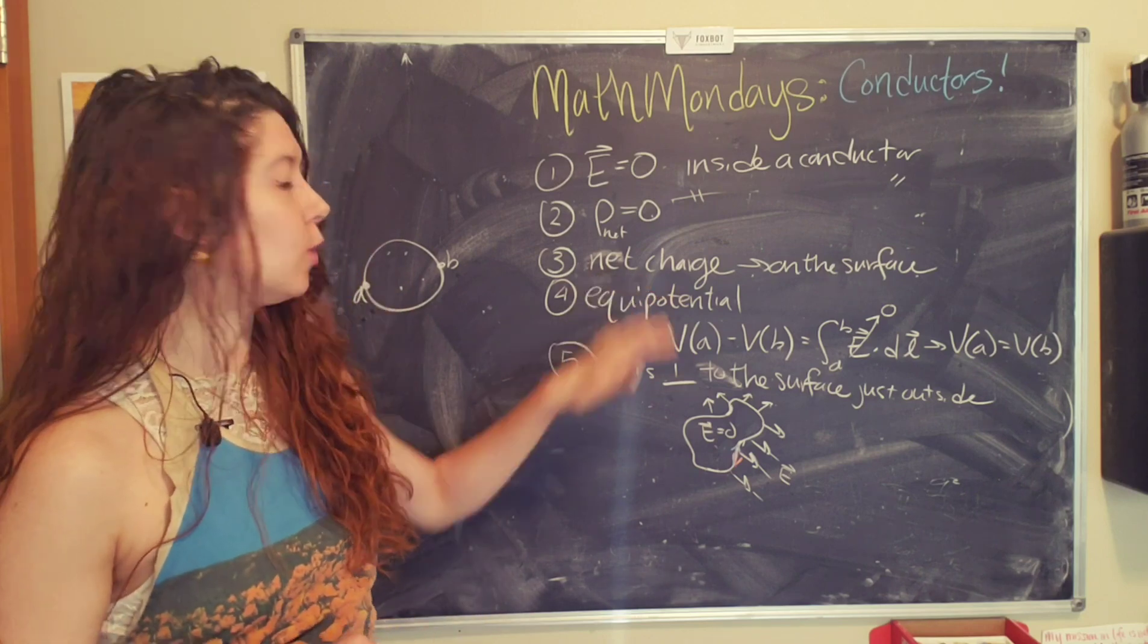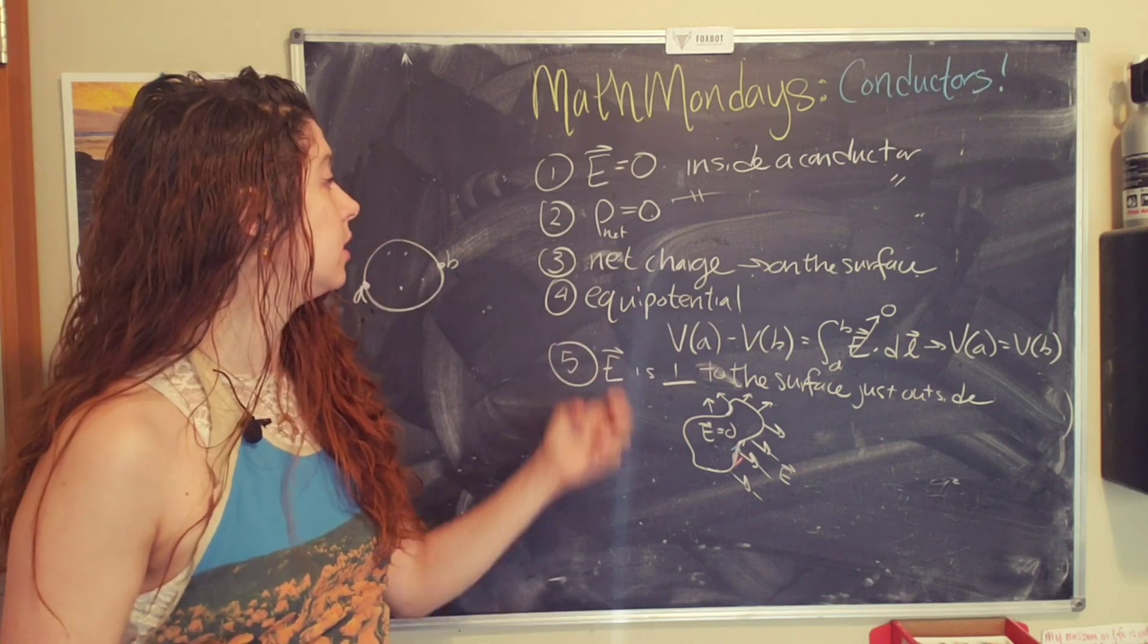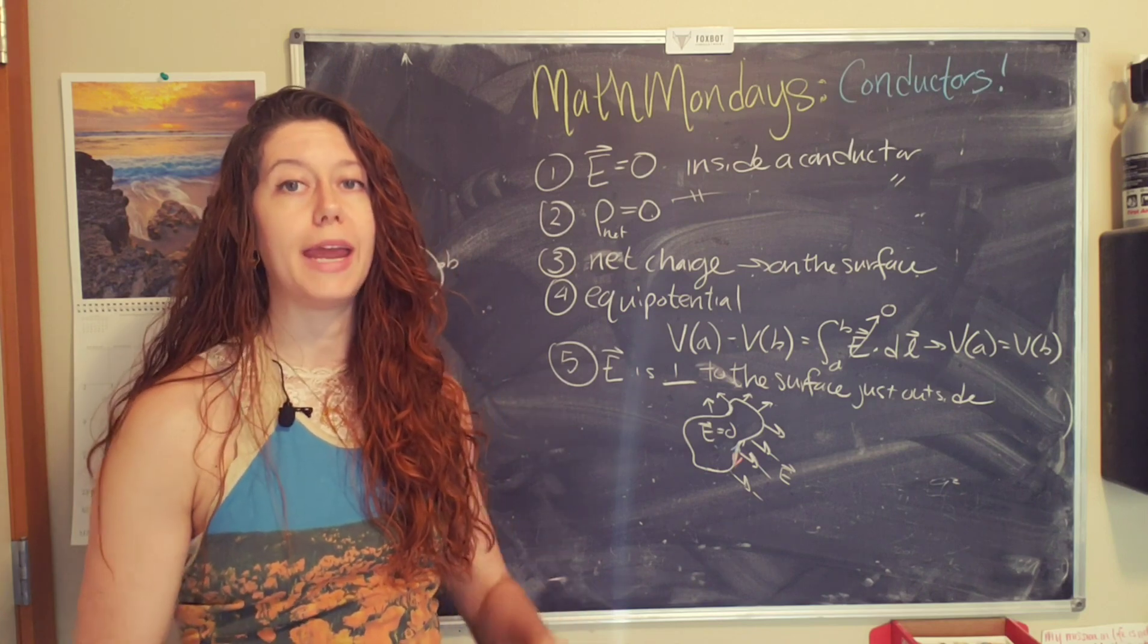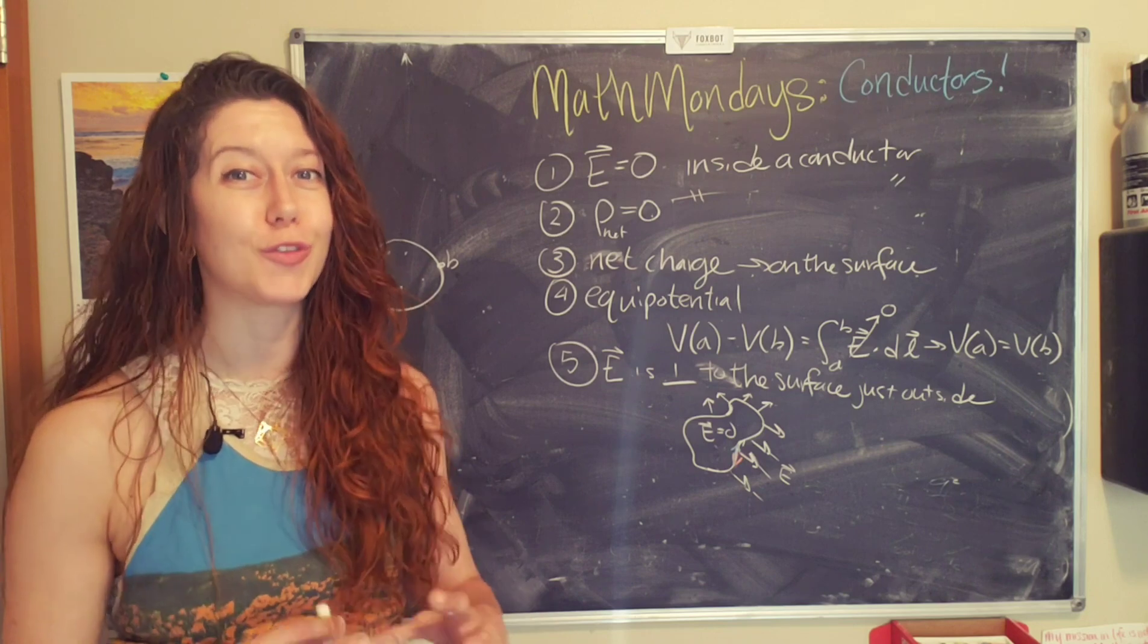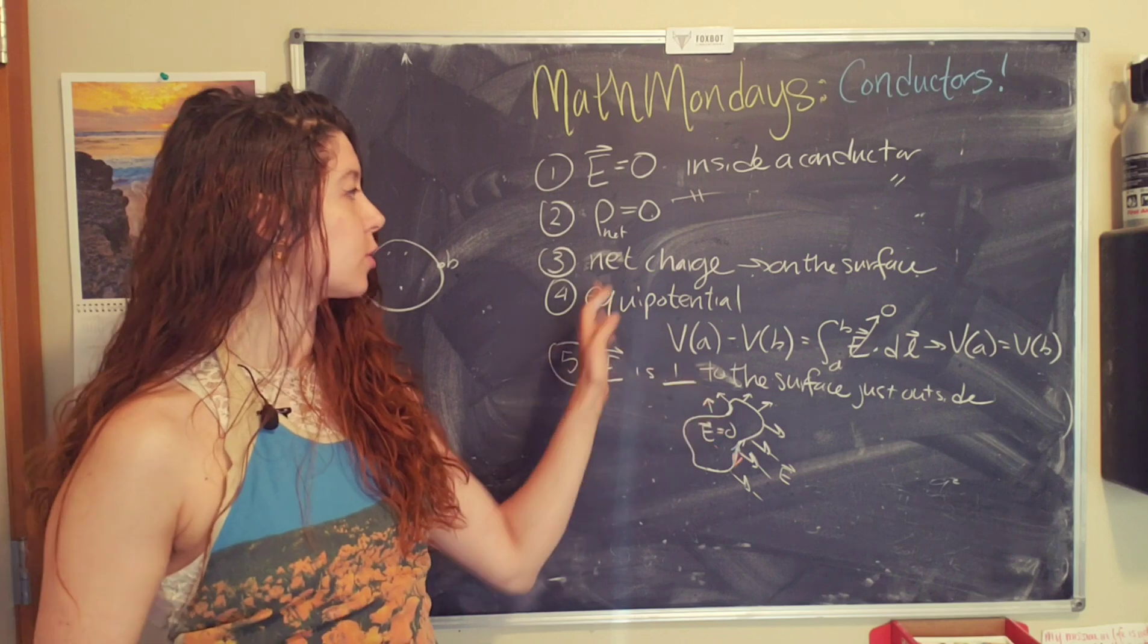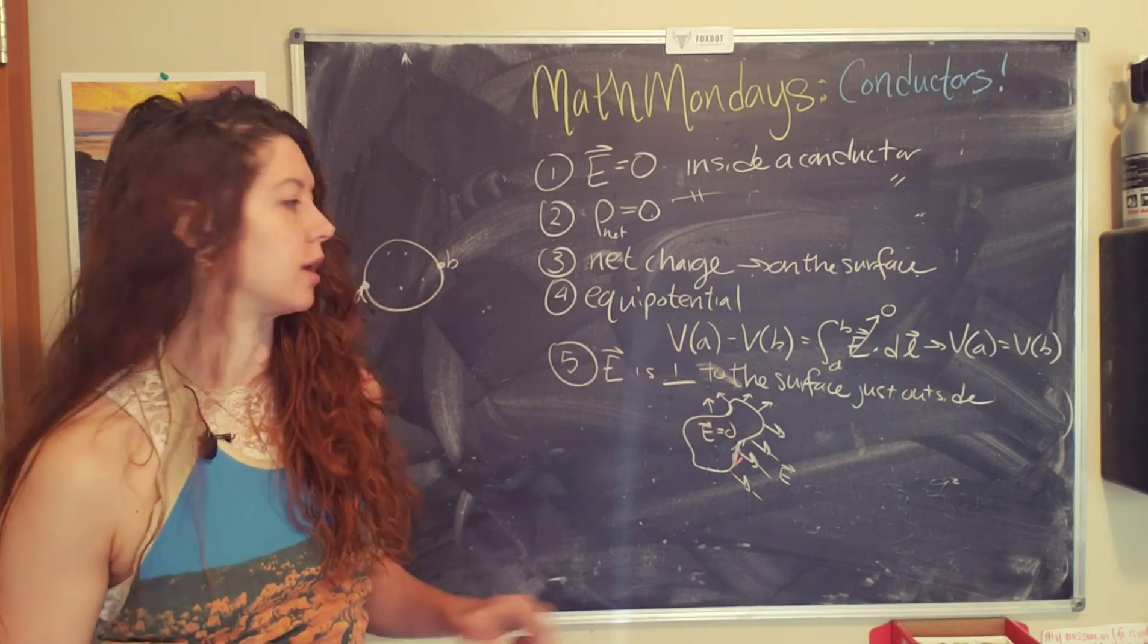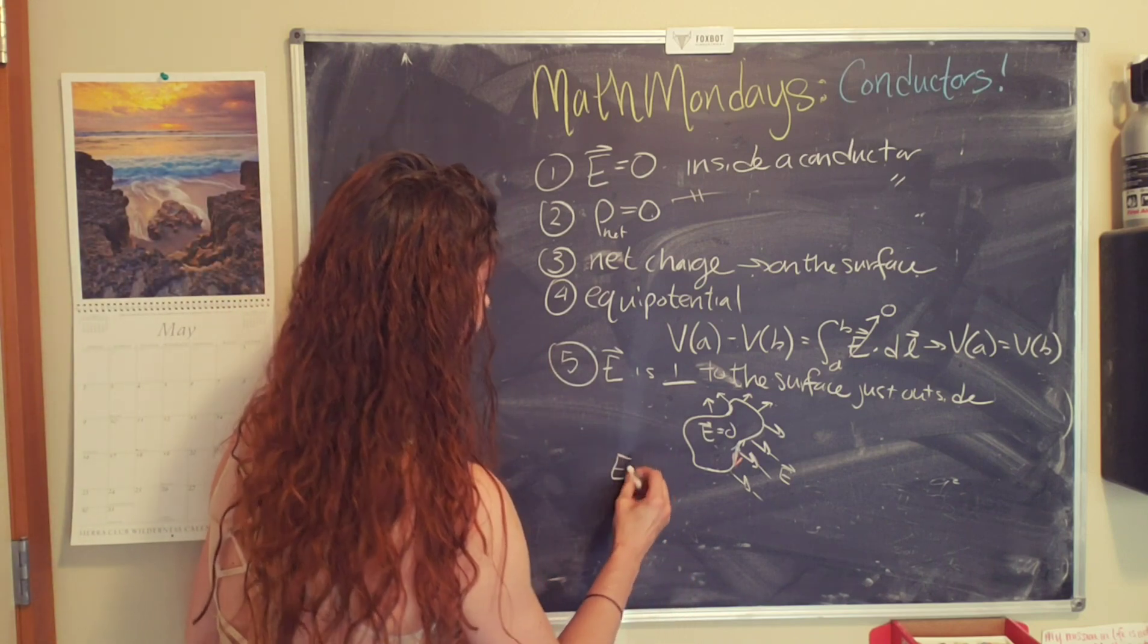And so it turns out that the potential energy is smaller for an even distribution of charge on the surface of a shape of a conductor. It's smaller than an even distribution of charge inside the conductor. I'm not going to go through the equations, but basically...